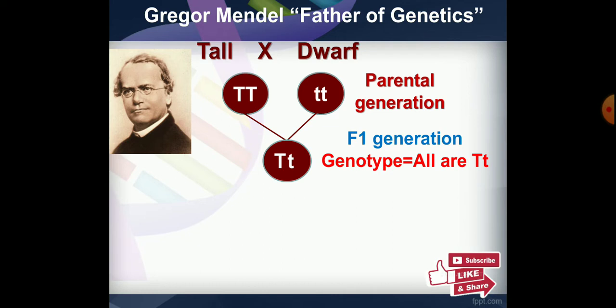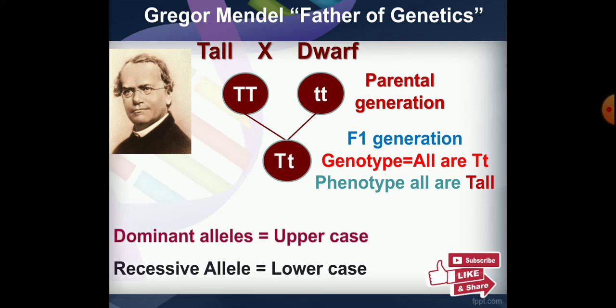In the F1 generation, all genotypes are the same: capital T, small t. Genotype refers to the genetic makeup. Capital T represents the dominant allele and small t represents the recessive allele.